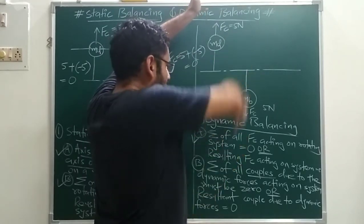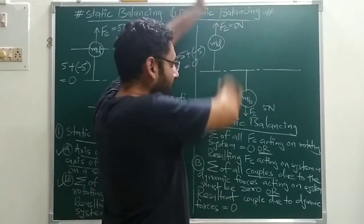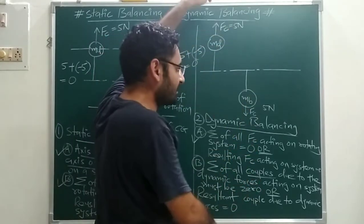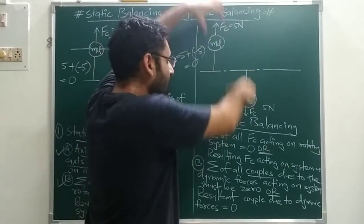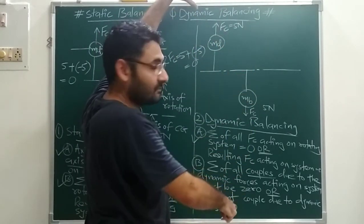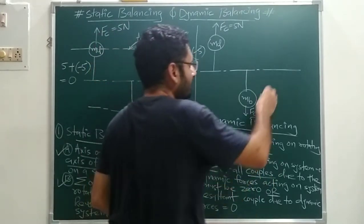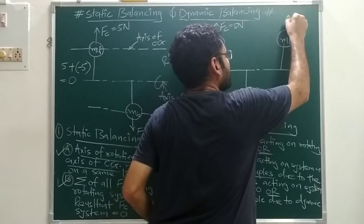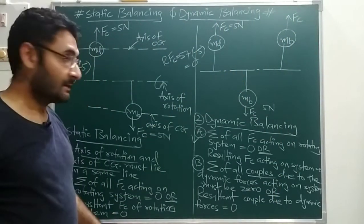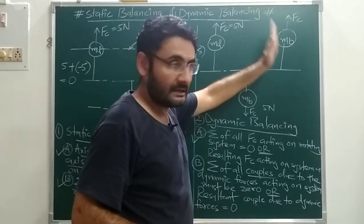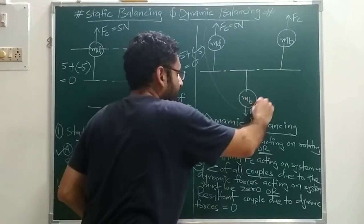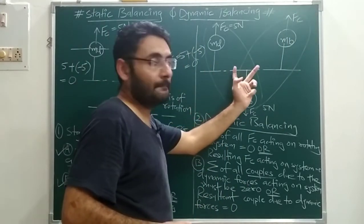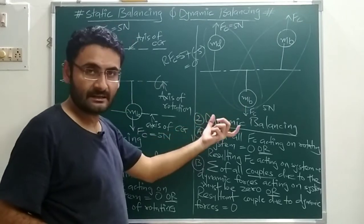With the current arrangement, there is only one couple from the disturbing mass and balancing mass. To satisfy the couple condition, you need to add one more balancing mass so that a second couple is created. The first couple is due to the first and second mass, and the second couple is due to the second and third mass. The summation of both couples must be zero for the system to be dynamically balanced.